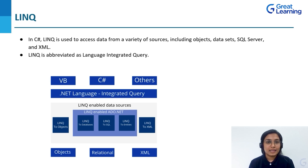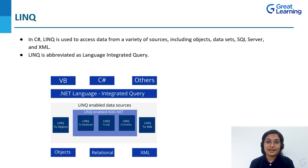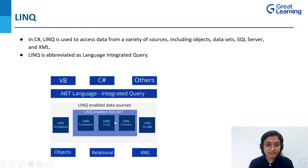LINQ stands for Language Integrated Query. One use of LINQ in the .NET framework is that when errors occur, it will tell you what the error is and show you help documentation. Everything is linked — it is already in the database, linked to the front end, and without it the front end and back end cannot communicate. It acts as an interface between the front end and back end, handling the action and the reaction.